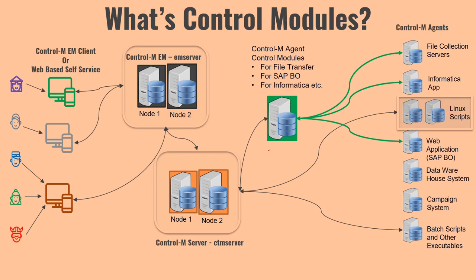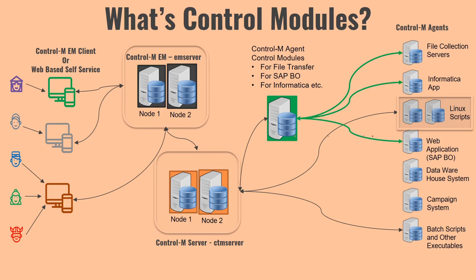From the interaction point of view, whenever you execute any third-party application job that requires a control module, the communication flow is: the user makes a request → Control M client → Control M EM server → Control M server → Control M agent on the dedicated machine. The Control M agent then interacts with the appropriate control module — for example, connecting to Informatica for an Informatica job, or to SAP BO for an SAP BO job — to process the request.